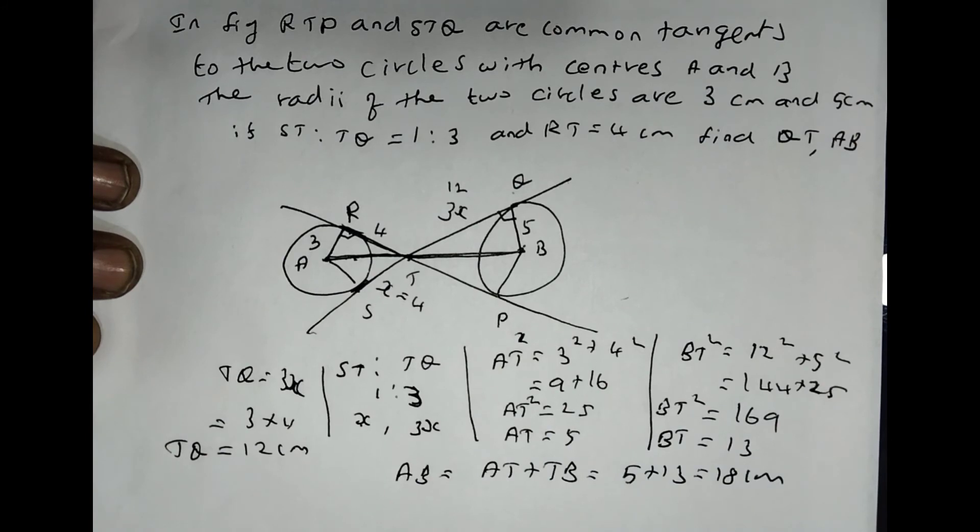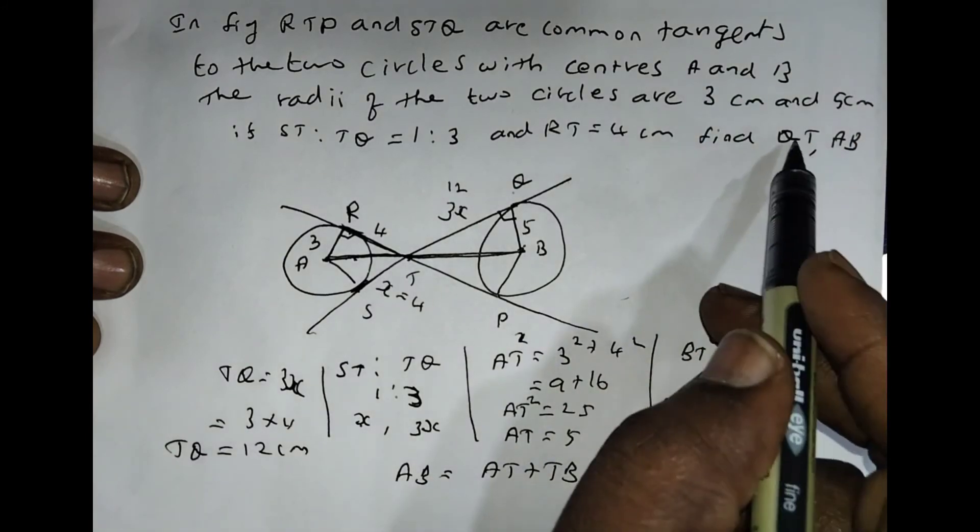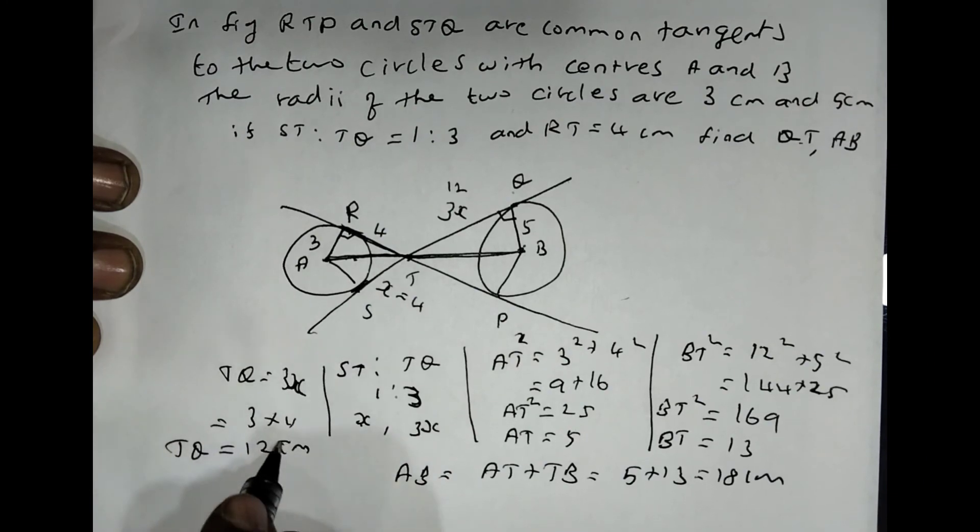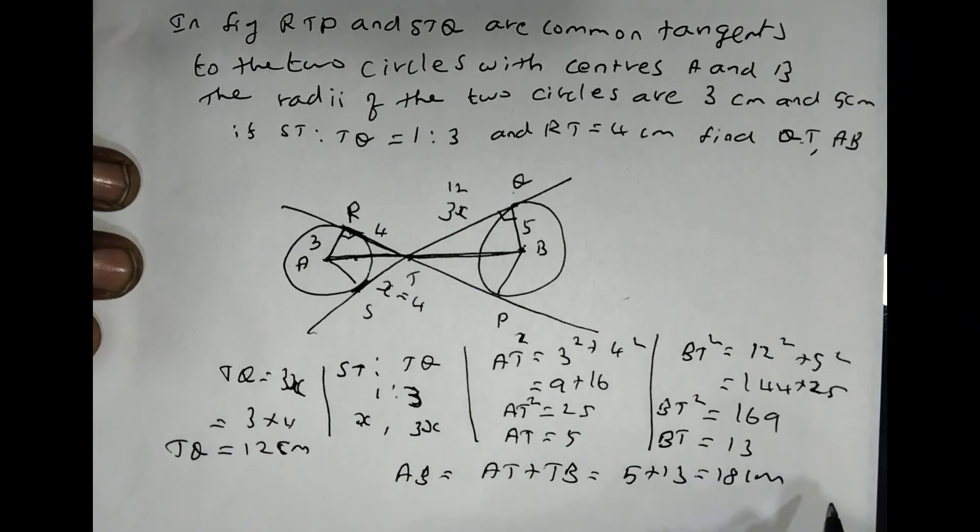So they asked to find two questions: what is the length of QD and AB. QD or DQ, both are same only, so 12cm. AB equals 18cm.